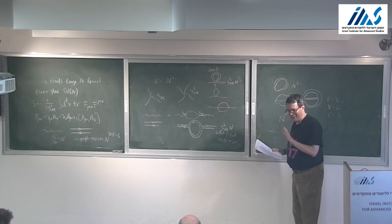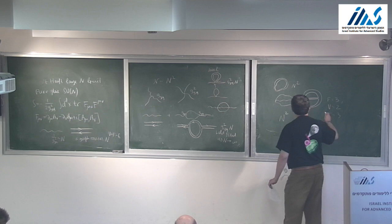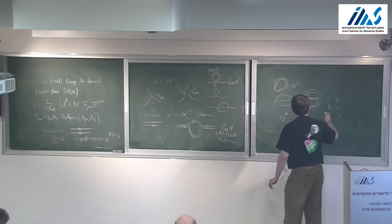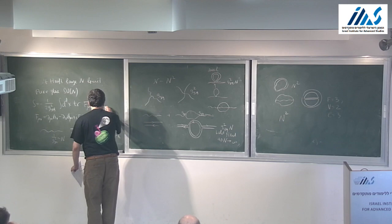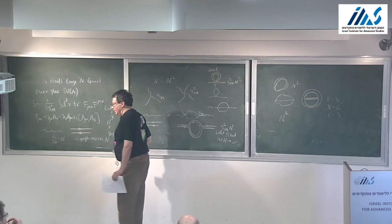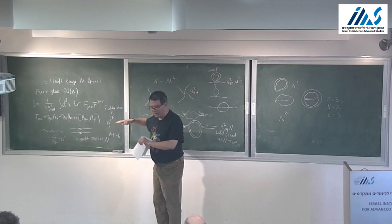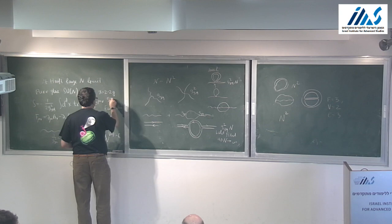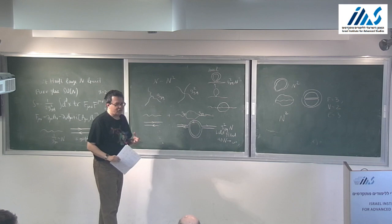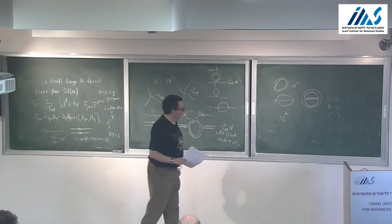This gives the famous topological expansion. The crucial formula is N^χ, where χ is the Euler characteristic. Euler established that for any convex polyhedron, V+F−E = 2. More generally, χ = 2−2g, where g is the genus of the surface. A sphere has genus 0, and so on.